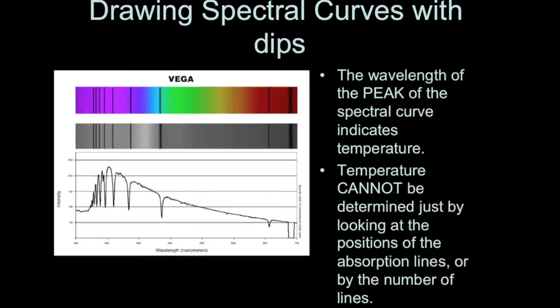And so just to summarize, the wavelength of the peak of the spectral curve indicates temperature. But temperature cannot be determined just by looking at the positions of the absorption lines or by the number of the lines. Just because there's a bunch of lines on the left part of the photographic spectrum doesn't mean that the star is hot or cool. It just means it's got that particular pattern which corresponds to particular elements that are there.